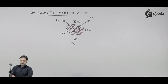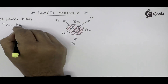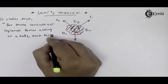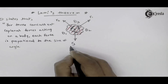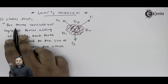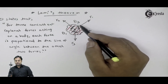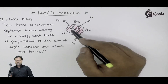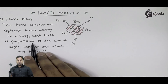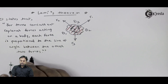Now I am writing Lame's theorem. Lame's theorem states that for three concurrent coplanar forces — here we have three concurrent forces passing through a single point, F1, F2, and F3 — acting on a body, each force is proportional to the sine of the angle between the other two forces. Let me explain it mathematically.